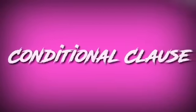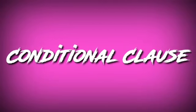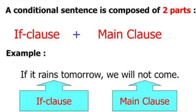Before entering the next point, let me say the hints of the conditional clause. Already we have studied this. Now we shall revise it. You all know about conditional clauses — we have two parts: one is the if-clause and another is the main clause. The if-clause starts with the condition word 'if', and the main clause carries the complete sense of the sentence. There are three types of conditions: probable condition, improbable condition, and impossible condition.